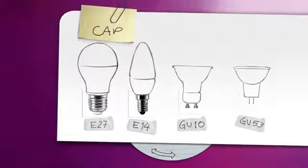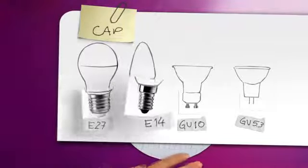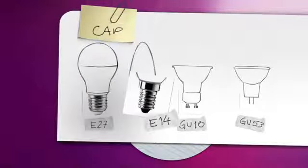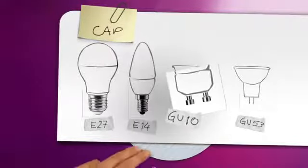Most popular are the screw bases: the E27 for big fittings and the E14 for small fittings like candles and lusters. But there are also specific caps like the GU10 or the GU5.3 for spots and other special fittings.